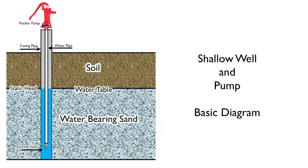Before we delve into flow rate and recovery rate, let's quickly go over what's going on in our well that we're not seeing. You've got a pipe in the ground, a casing pipe, and a water pipe inside the casing pipe. Inside the casing pipe is what holds our usable water, drawing from water-bearing sand. Our static head is somewhere around the water table within this sand.